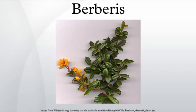Some horticultural variants of B. thunbergii have dark red to violet foliage. The flowers are produced singly or in racemes of up to 20 on a single flower head.